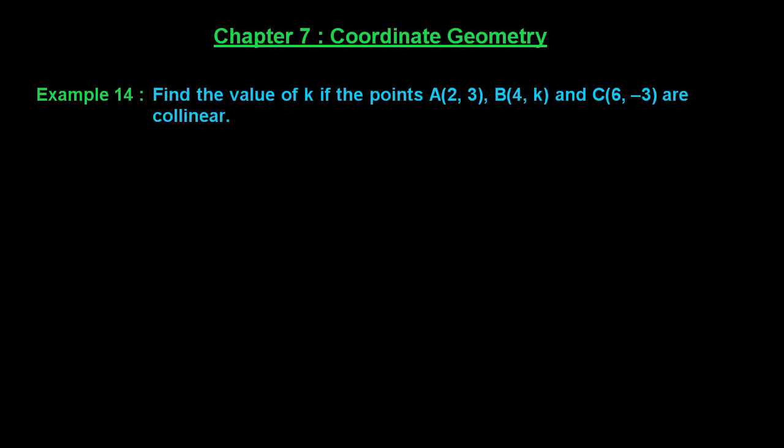Welcome friends, let us solve example number 14 of chapter 7. The example says: Find the value of K if the points A(2,3), B(4,K), and C(6,-3) are collinear.